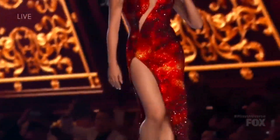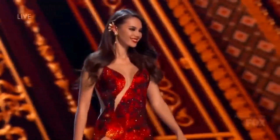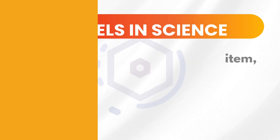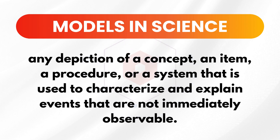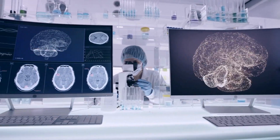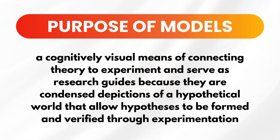When we are talking about models, the first thing that comes to our minds are those brown queens from different pageants or those wearing fashionable clothes on a runway. However, models in science are any depiction of a concept, an item, a procedure, or a system that is used to characterize and explain events that are not immediately observable. Models play a crucial role in research and in explaining findings. They serve as a cognitively visual means of connecting theory to experiment and serve as a research guide, as they are condensed depictions of a hypothetical world that allow hypotheses to be formed and verified through experimentation.